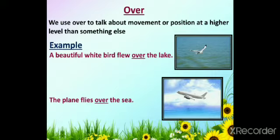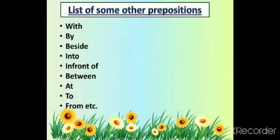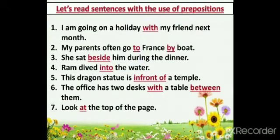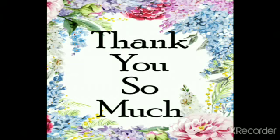'Over' is used to talk about movement or position at a higher level than something else. Examples: A beautiful white bird flew over the lake. The plane flies over the sea. Other prepositions include: with, by, beside, into, in front of, between, at, to, from, etc. Example sentences: I am going on a holiday with my friend next month. My parents often go to France by boat. She sat beside him during the dinner. Ram dived into the water. This dragon statue is in front of a temple. The office has two desks with a table between them. Look at the top of the page. Thank you dear students, keep washing and sanitizing your hands, stay home, stay safe.